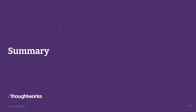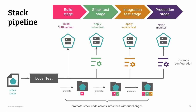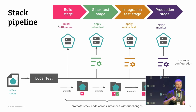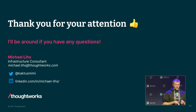This brings us to the summary. If you remember one thing from this talk: one code base per stack, factor out the configuration, and promote this code base through your environments. This is a very generic approach you can apply to whatever infrastructure framework you use, and it will allow you to easily create those pipelines as an important step towards automation. And that's it — thank you.